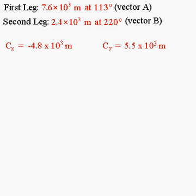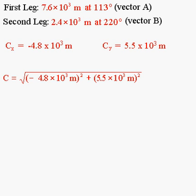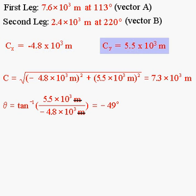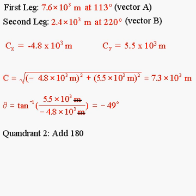With X = −4.8 × 10³ m and Y = 5.5 × 10³ m, we find the magnitude by squaring each component, adding them, and taking the square root: 7.3 times 10 to the 3rd meters. For the angle, we take the inverse tangent of Y divided by X, giving −49 degrees. Since the X component is negative and Y is positive, the vector is in quadrant 2, so we add 180 degrees: −49 + 180 = 131 degrees.